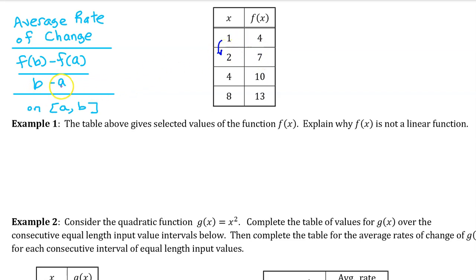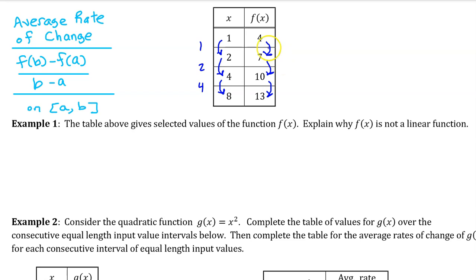On a table, we show the b minus a values like this: 2 minus 1 is 1, 4 minus 2 is 2, and 8 minus 4 is 4. These are the values of b minus a for each interval. Similarly, we show the f(b) minus f(a) part: 7 minus 4 is 3, 10 minus 7 is 3, and 13 minus 10 is 3. These are the values of f(b) minus f(a) for each interval.